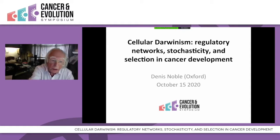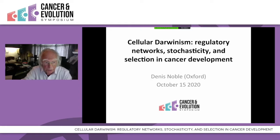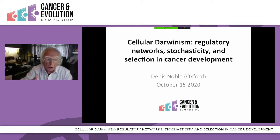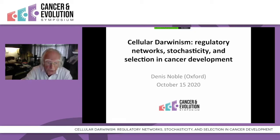My presentation will show that to understand this parallel and to use it effectively, we need to turn the current popular theory of evolution, the modern synthesis, on its head. That theory is based on the idea that inherited variations are purely random. The better survival of fitter organisms is then attributed to blind, undirected natural selection. I will show in my talk that the reverse is the case.